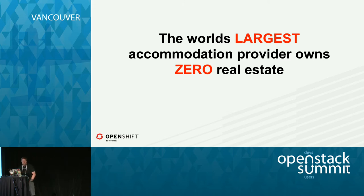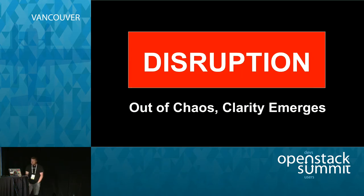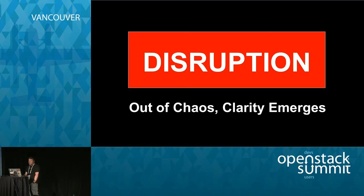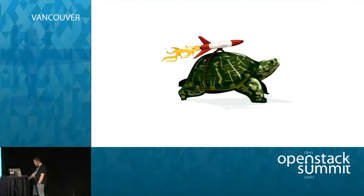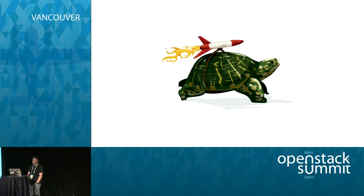Anyone can compete in this age with cloud computing. But out of all of this disruption, clarity emerges — you have to be able to compete, even if you're a large enterprise, with the small companies. As a large enterprise, you have to be able to compete with the 50 to 100 person companies. When you're a slow-moving enterprise, you need to get some speed under your belt and stop the paper pushing and be able to deliver faster.